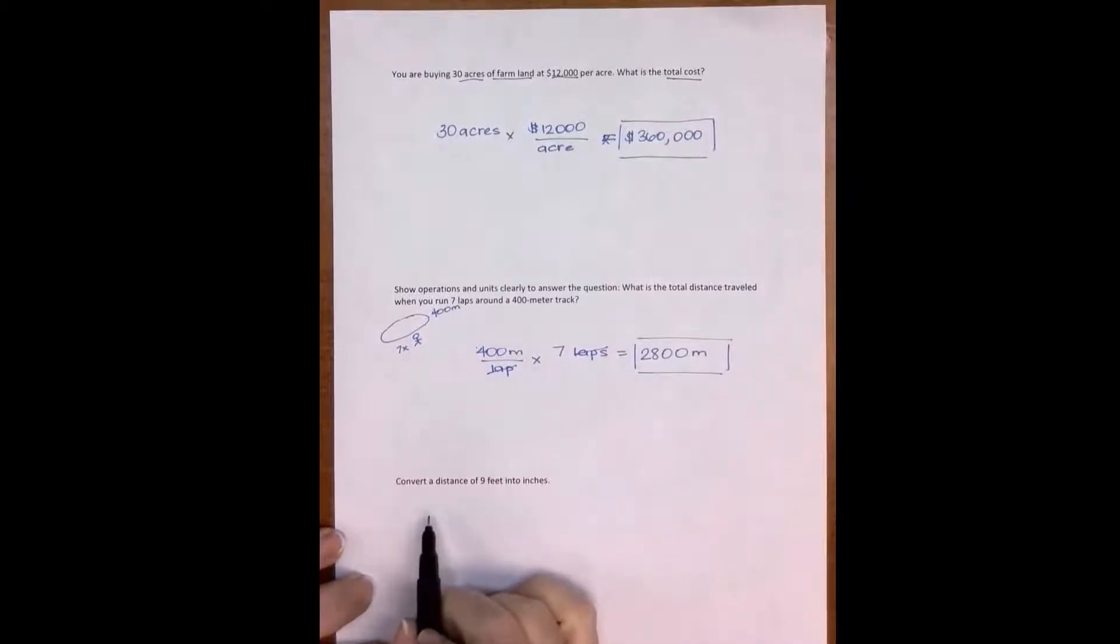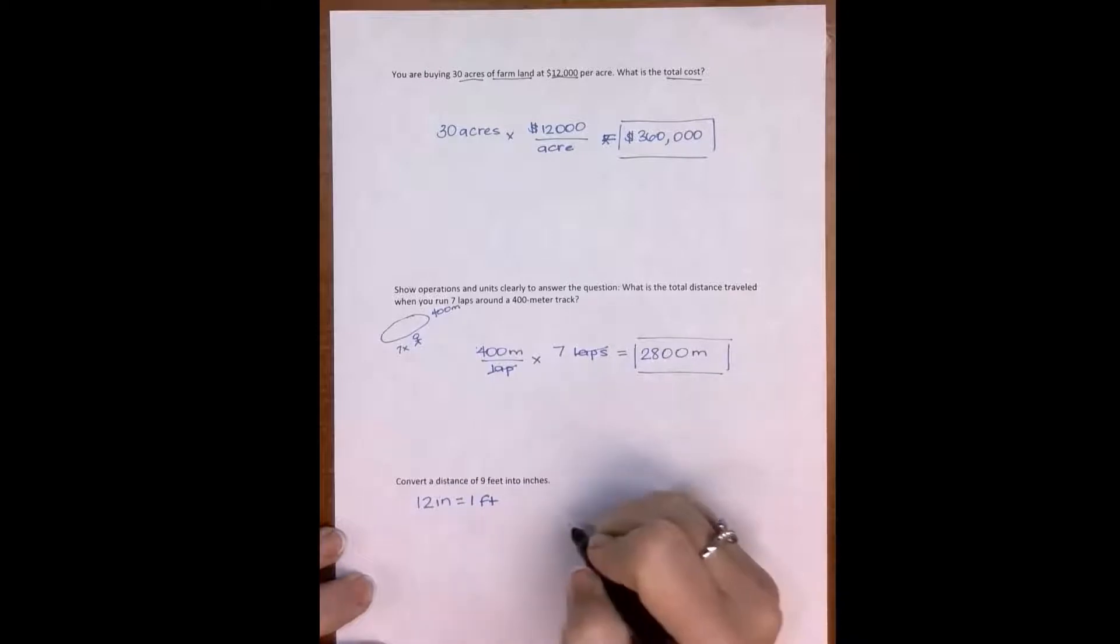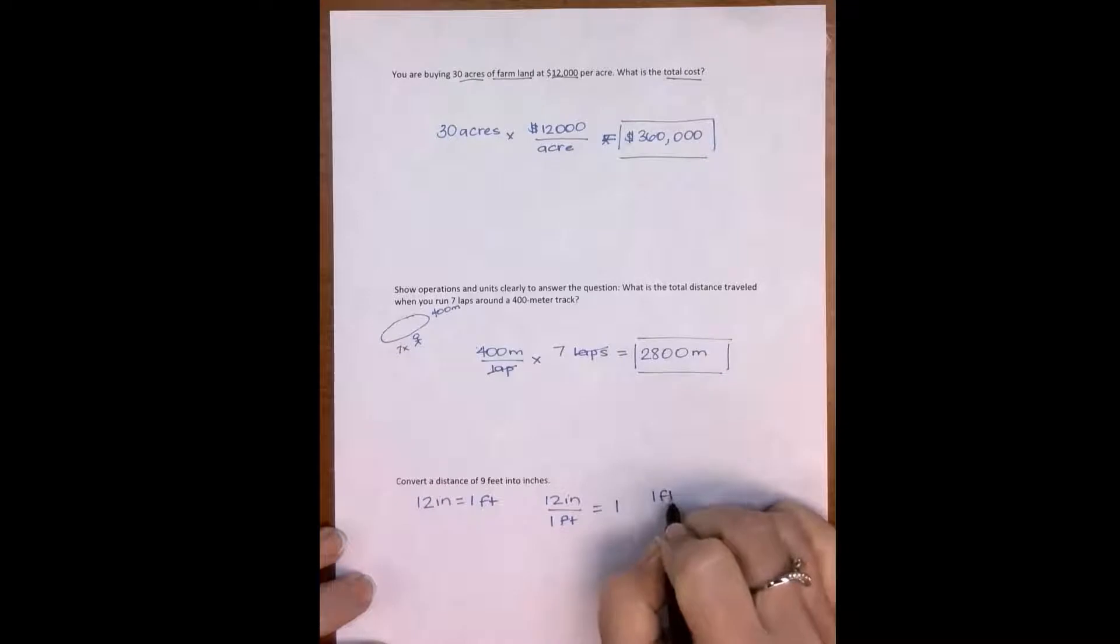The next example I want to work for you is a conversion problem. This conversion problem counts on you recognizing that we can multiply any number by one and it will still be the same number. We're talking about feet and inches. We know that 12 inches is equal to one foot. So 12 inches over one foot is equal to one, and one foot over 12 inches is one. The way I write it depends on which way I need to go from inches to feet or feet to inches.